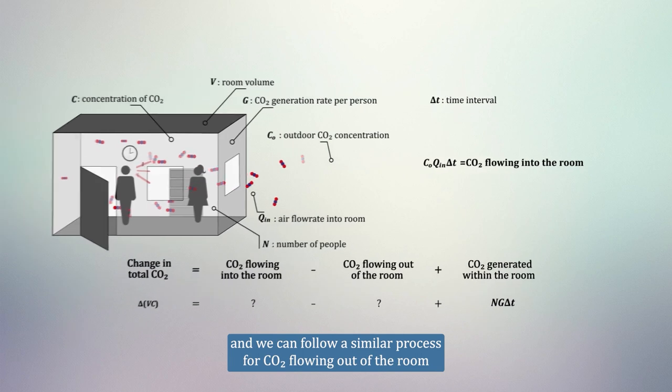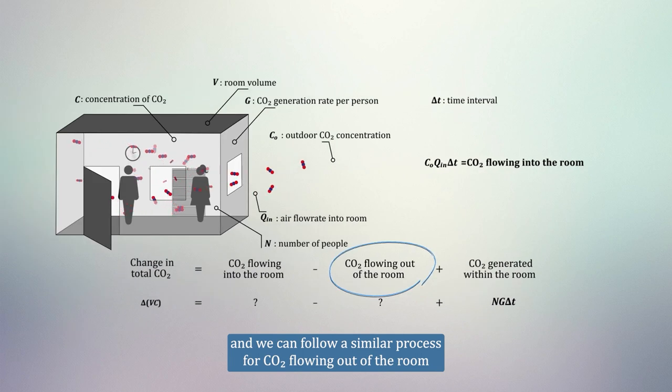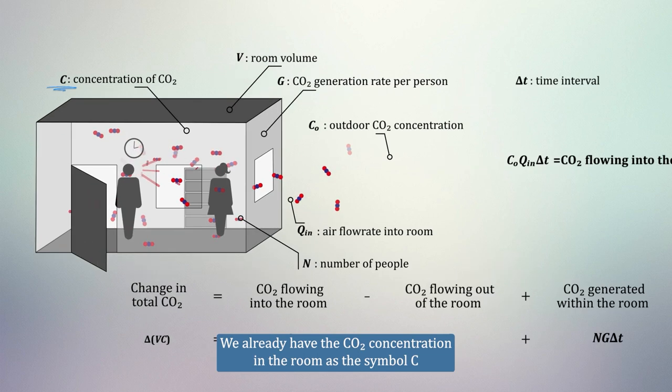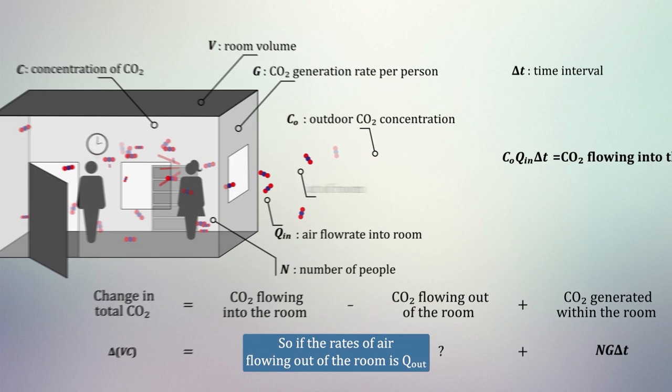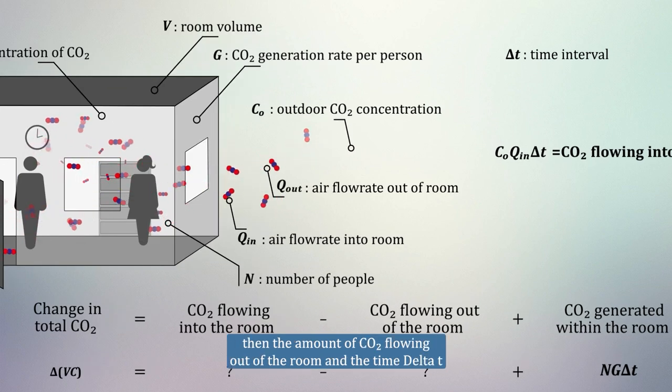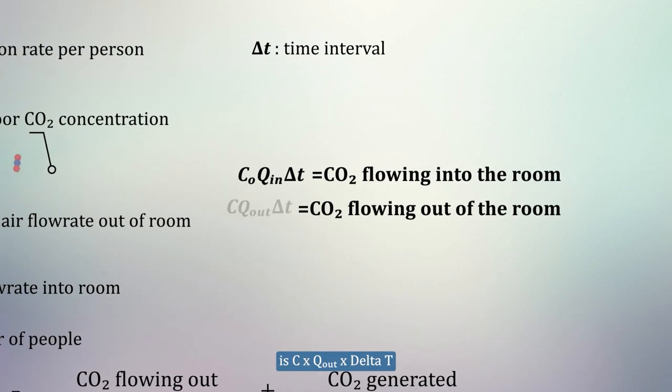And we can follow a similar process for CO2 flowing out of the room. We already have the CO2 concentration in the room as C. So if the rate of air flowing out of the room is Q out, then the amount of CO2 flowing out of the room in the time delta T is C times Q out times delta T.